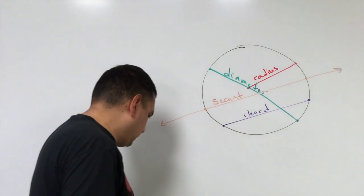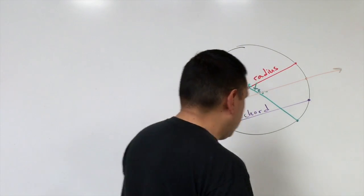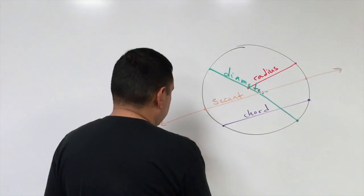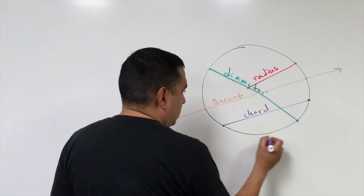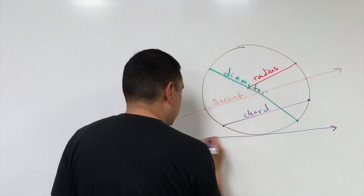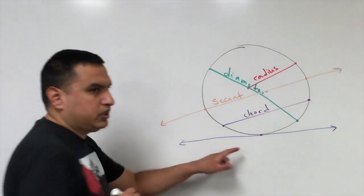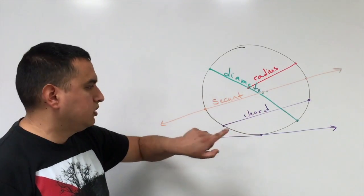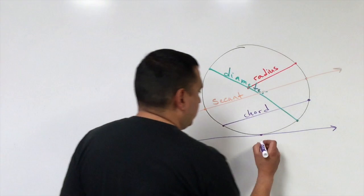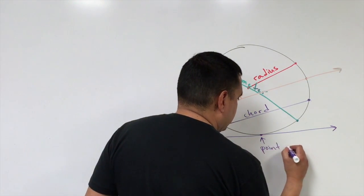And then we have one more: this one touches the circle just once, and it's called the tangent line. It only touches the circle at exactly one point, and we call that point the point of tangency.